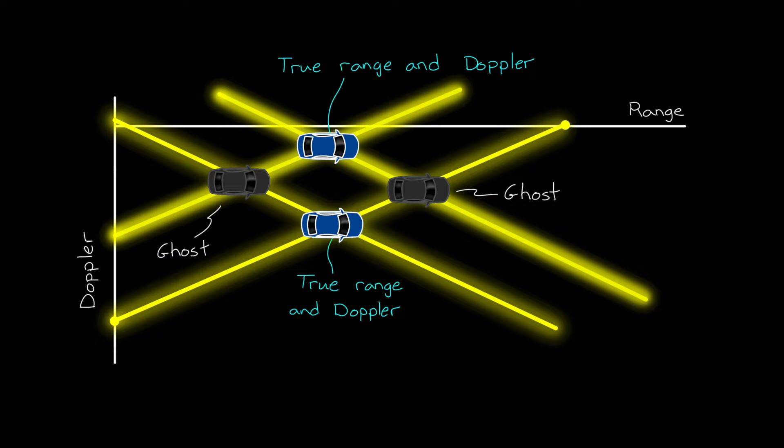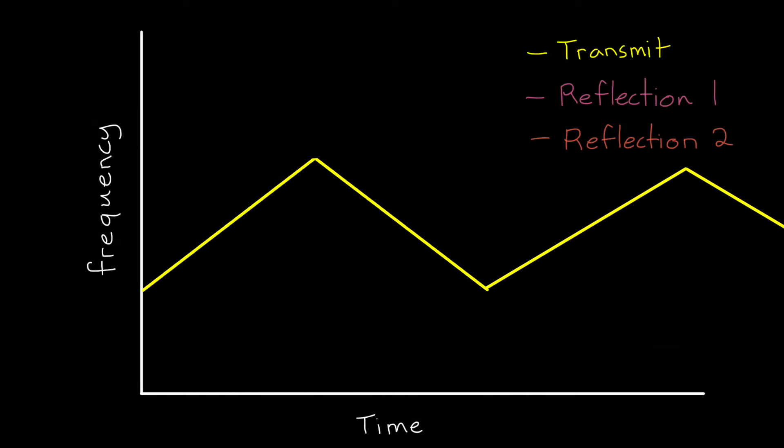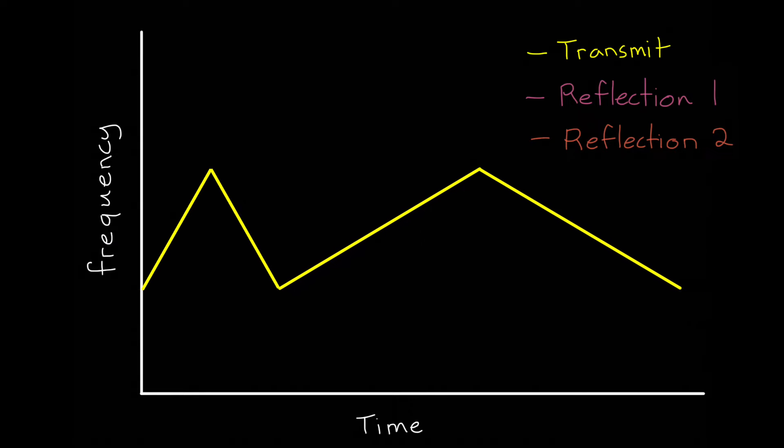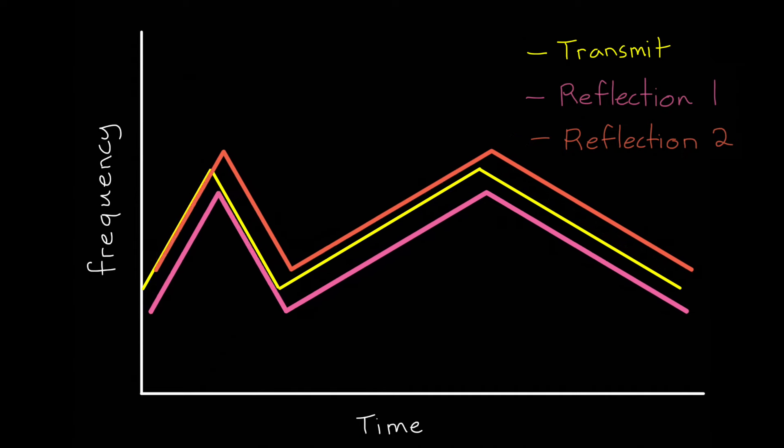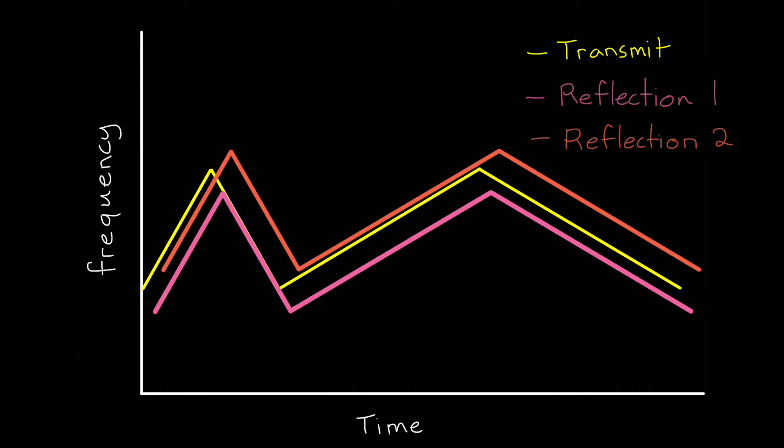Now we need to get around this problem, and there are several clever things that we could do. For one, we could change the triangular modulation such that it alternates between two triangles of different slopes. With this setup, a Doppler shift would be the same for all four slopes, but if you apply a range shift, the apparent delay associated with the steeper slope is less than the other one. And this provides us with additional equations, or additional beat frequencies that we can use to solve for the additional unknowns that come from ghost detections.